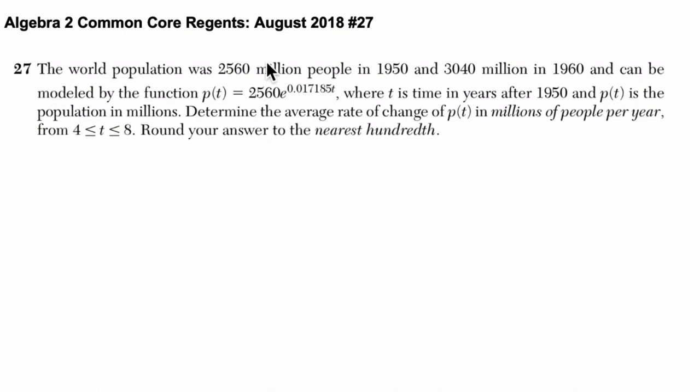Okay, so the world population was 2,560 million people in 1950 and around 3 billion in 1960 and can be modeled by this function p of t equals 2,560 e to the power of 0.017185t, where t is time in years after 1950.